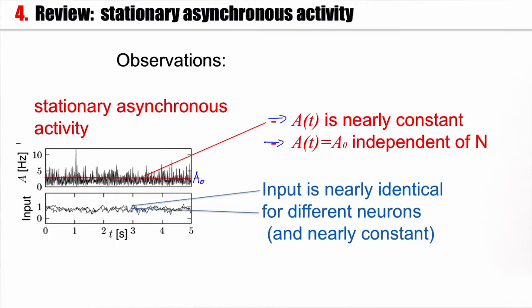Moreover, we had an interesting observation that the typical input is more or less the same for each neuron, whether it's neuron number 10 or neuron number 3025. Now, I said the activity is constant but at the same time we observed that we have these large fluctuations around. So we have to define what we really mean by stationary asynchronous activity.